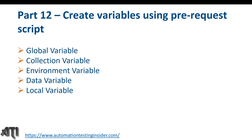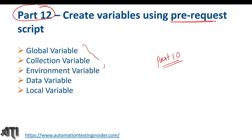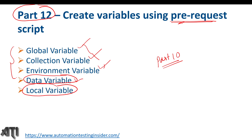Hello everyone, welcome back to another video of Automation Testing Insider. Today I'm going to show you how we can create different variables using pre-request script. This is Part 12 of the API testing series. Earlier we have already spoken about different variables in Postman and how we can create those variables — global variable, collection variable, environment variable, and local variable inside pre-request script. Data variable is a separate topic which we are going to discuss in coming videos. Today we are going to see how we can create global variable, collection variable, and environment variable inside pre-request script.